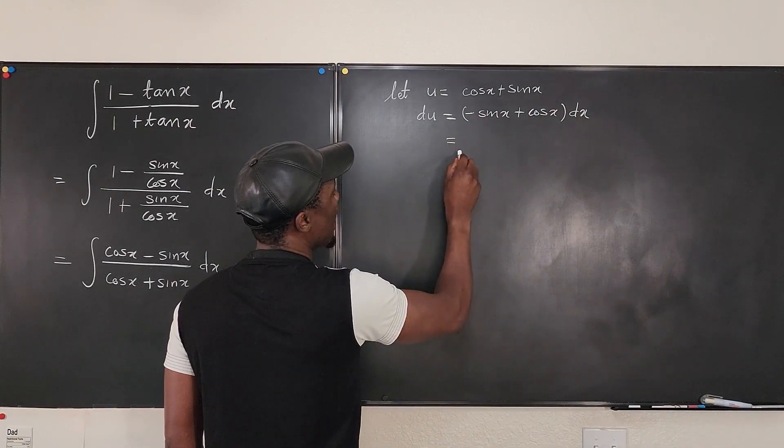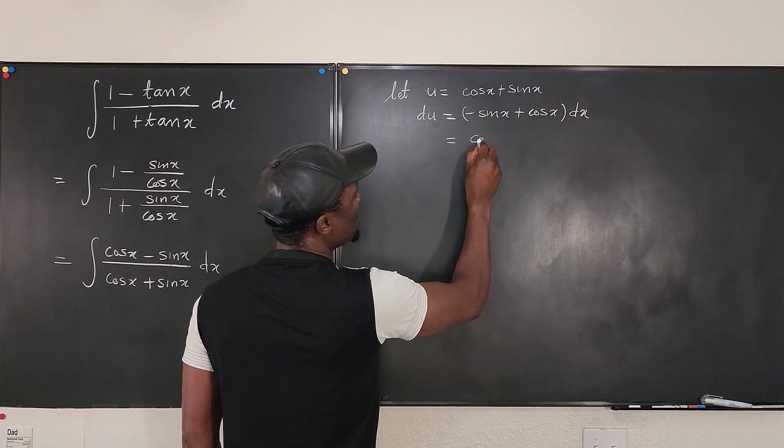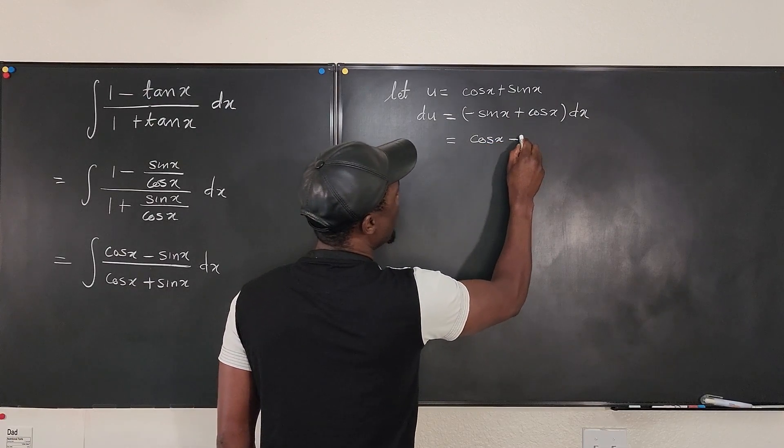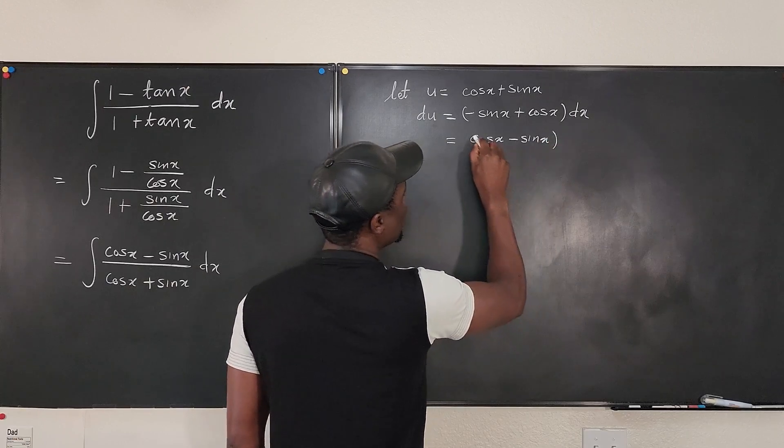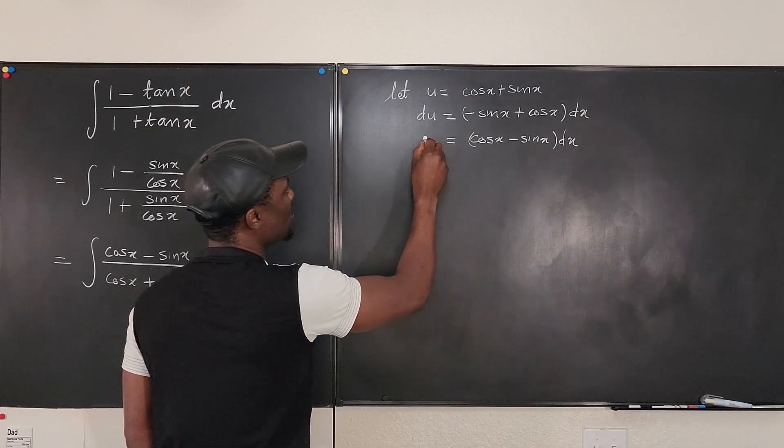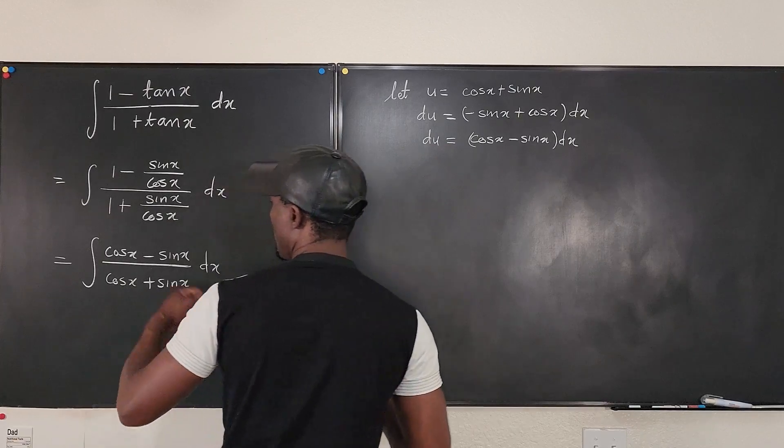Well, this can be written as cosine x minus sine x dx. That's what du is. So let's go back here.